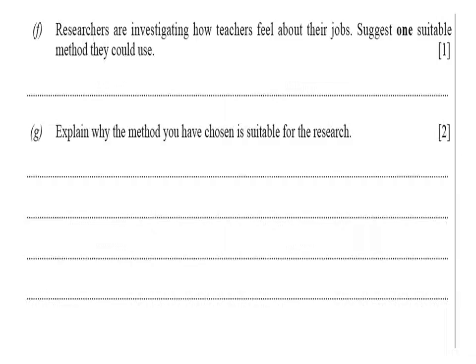Then explain why the method you have chosen is suitable — you need to include keywords that respond to that question. For example, the response rate — the percentage of people who take part — would be quite high because teachers would feel more comfortable doing a questionnaire or an interview. You would also get valid results from using a questionnaire because you could do it anonymously, so teachers would be able to answer more truthfully. An informal interview would also be suitable because it would be more relaxed and you are more likely to get accurate, valid answers.